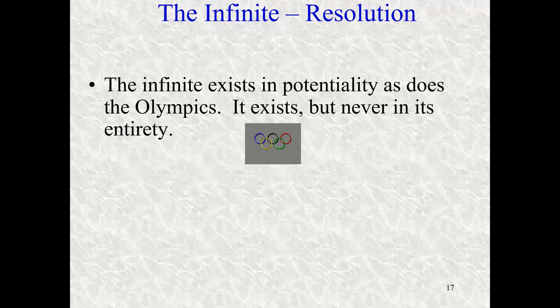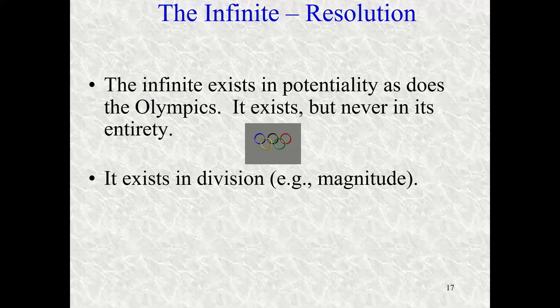Now, but you can say we're seeing the Olympics. So you don't have it all at once. So the infinite exists, but you just don't have it all at once. It exists in two ways for Aristotle. It exists in division.